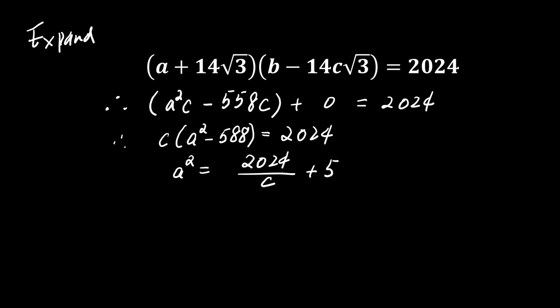Thus, a squared equals 2024 divided by c plus 588, which is greater than 576, the square of 24.